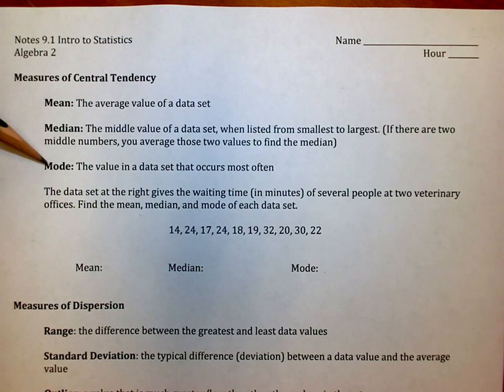The only one that might trick you up is if we do have a set of values and there seems to be two middle values, you take those and average them together and that gives you the median.